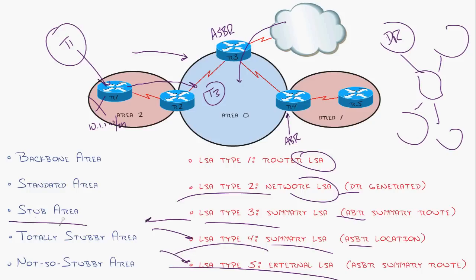Now, combine these together, stub area does not allow type five LSAs. Totally stubby area blocks completely type three, type four, and type five LSAs. Doesn't care about them. That's how it shrinks the routing table.